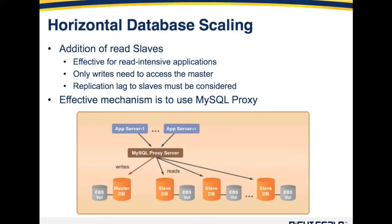An effective mechanism to implement this is MySQL proxy, pictorially represented here. Your app servers 1 through N, instead of talking directly to the database, talk to the MySQL proxy server. The MySQL proxy is smart enough to know where the master database is and where all the slaves are. If a write request comes in, it sends it directly to the master. If a read request comes in, it distributes it to one of the read slaves, typically in a round-robin fashion, although other algorithms are useful as well.